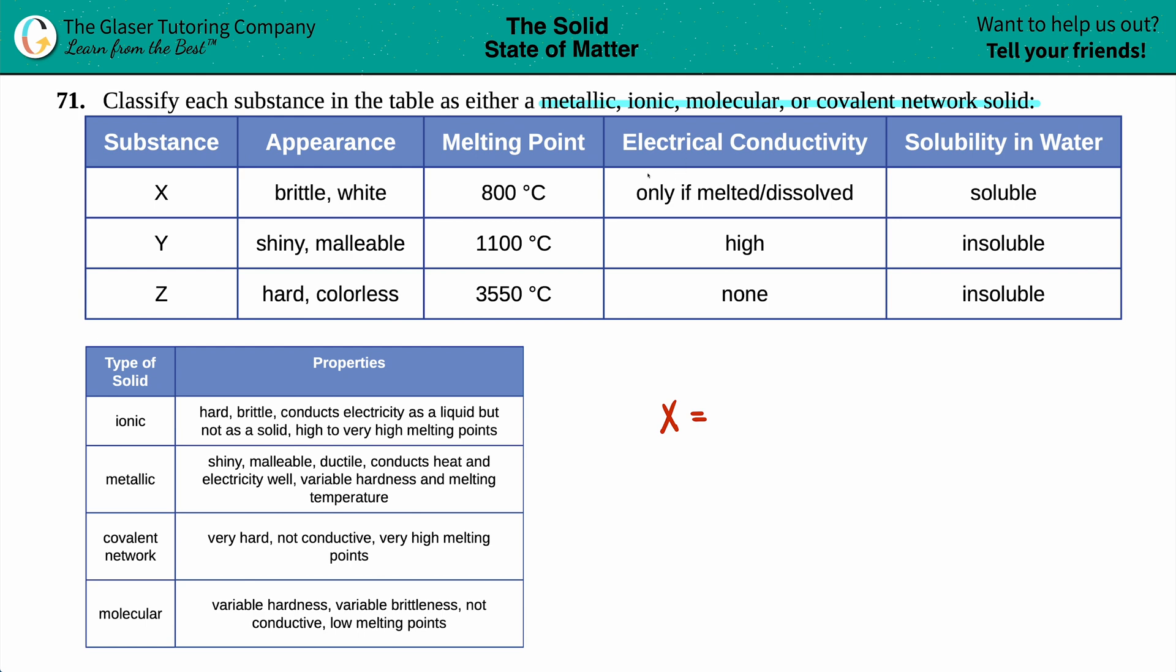Electrical conductivity only conducts electricity when it's either dissolved in aqueous solution, so in water, or if it's melted. Now, as soon as you see this information, that this substance, whatever it is, needs to get melted in order to conduct electricity. Meaning if I take the solid form of whatever the substance is, if I take a probe and I probe it and have a wire that's connecting to a light bulb, it will not turn on. The light bulb will not turn on because it's in the solid form.